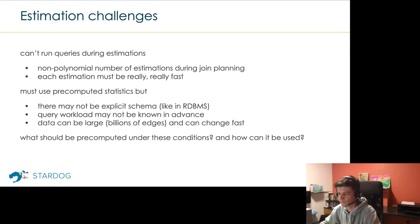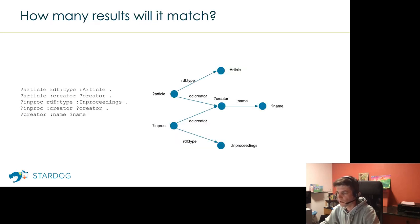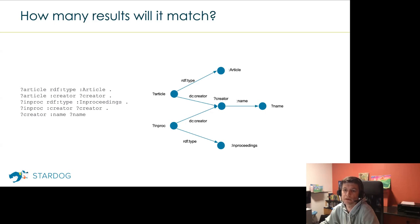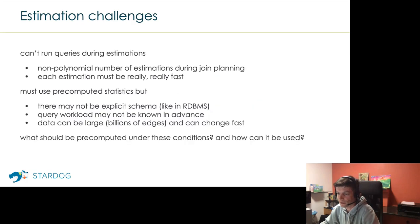A clarifying question: when we say cardinality estimate, are we including things like whether different attributes are correlated? Yes — it's the cardinality of any intermediate result as well. When two patterns A and B are joined, we need to know the correlation of A and B — how often they occur together. If the database system assumes independence all the time, there's not much you can do in SPARQL space.